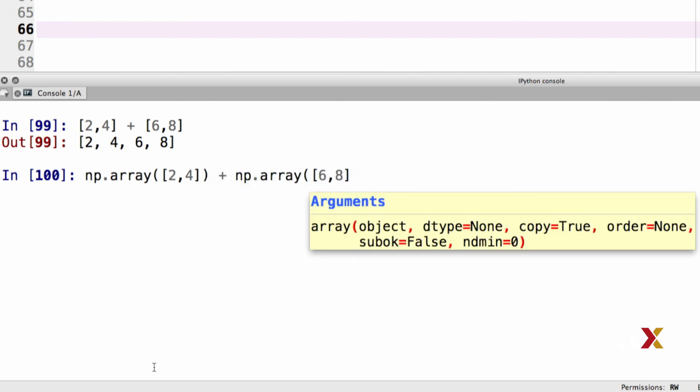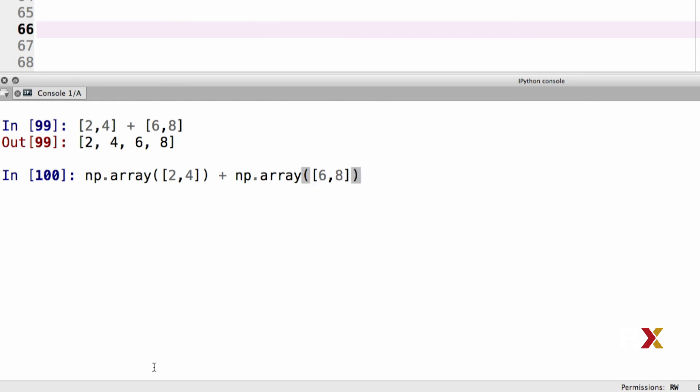I'm going to add that to another numpy array which has elements 6 and 8. In this case, what's happening is we have two one-dimensional arrays and what we've accomplished here is an element-wise addition between these two arrays.